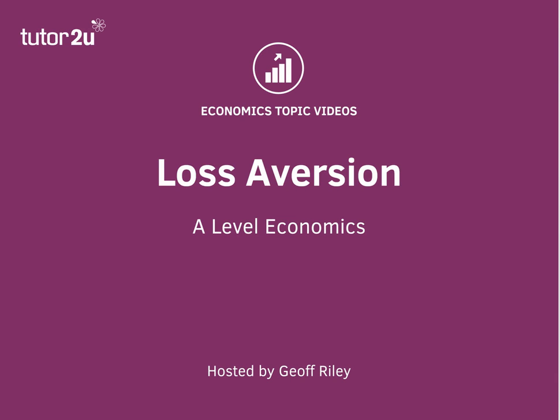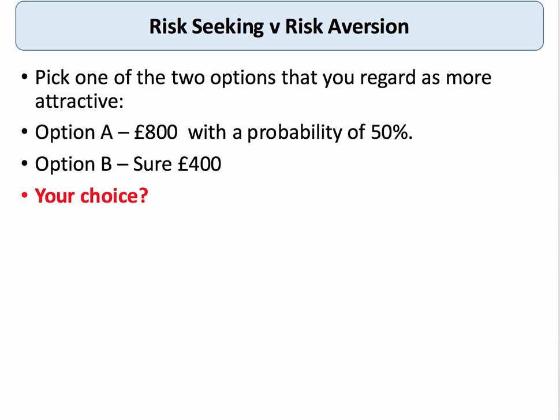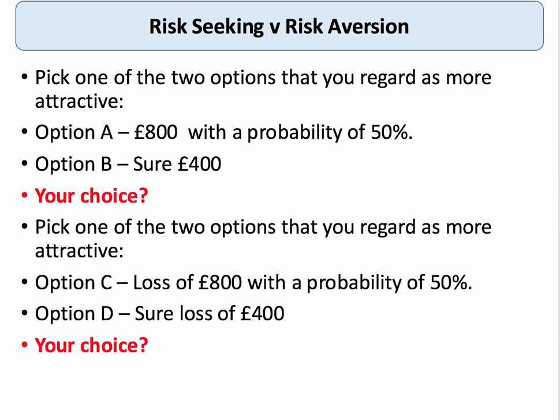Welcome to another in our series of videos on behavioral economics. In this session we're going to think about the important topic of loss aversion. Consider this situation: pick the option you find more attractive. Option A is 800 pounds with a probability of 50%, or Option B is a sure 400 pounds. Here's another scenario: Option C is a loss of 800 pounds with a probability of 50%, Option D is a sure loss of 400 pounds.